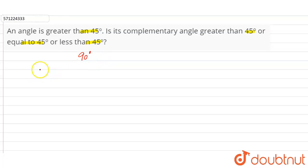Let two angles be angle 1 and angle 2. It is given in the question that angle 1 is greater than 45 degrees, and we need to find whether angle 2 is greater than 45 degrees, equal to, or less than 45. So let's take one example.